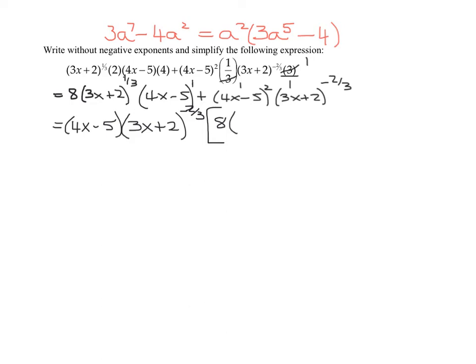Now the tricky part, what exponent is it going to leave on the three X plus two? I'm factoring three X plus two to the negative two thirds out of this expression here. So remember, how did I get this five here? I did seven minus what I'm factoring out. So I'm going to put a little room on the right hand side here. I started with a one third power and I'm factoring out a negative two thirds.